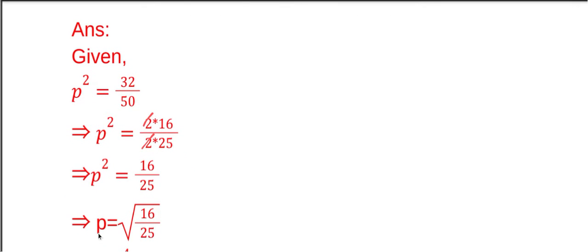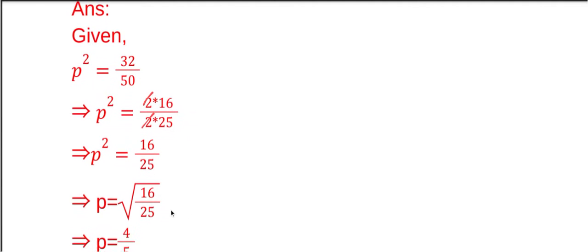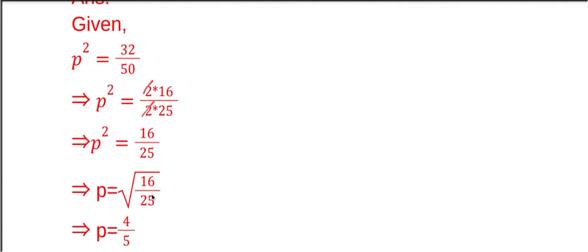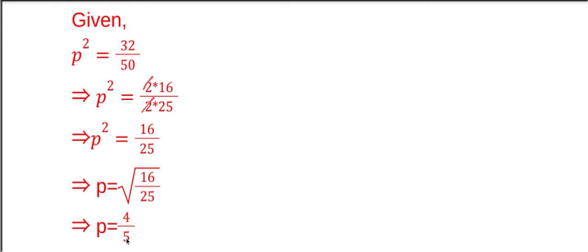P will be equal to the square root of 16 by 25. We know that the square root of 16 is equal to 4, and the square root of 25 is 5. Therefore, P is equal to 4 by 5.